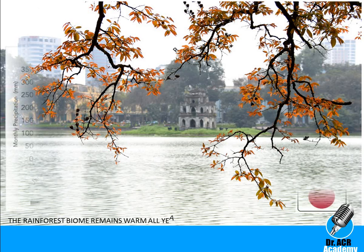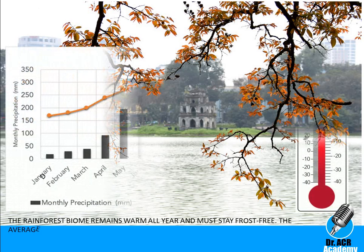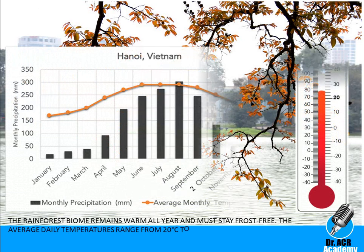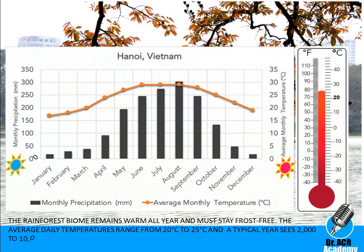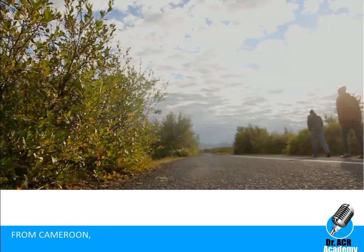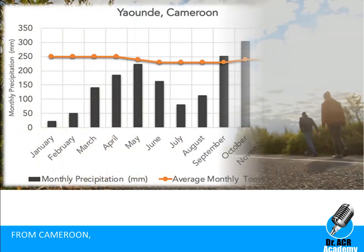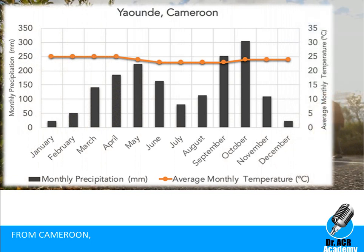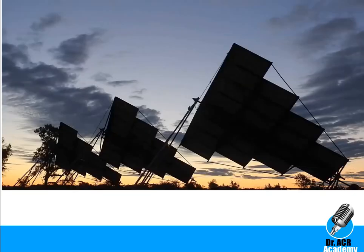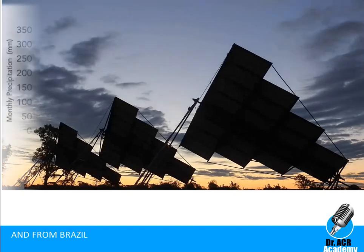The rainforest biome remains warm all year and must stay frost free. The average daily temperatures range from 20 degrees Celsius to 25 degrees Celsius, and a typical year sees 2,000 to 10,000 millimeters of rain per year. This is shown in graphs of rainforests from Vietnam, Cameroon, and Brazil.